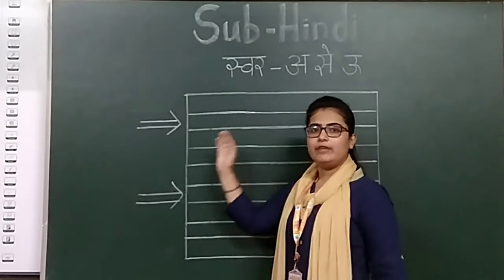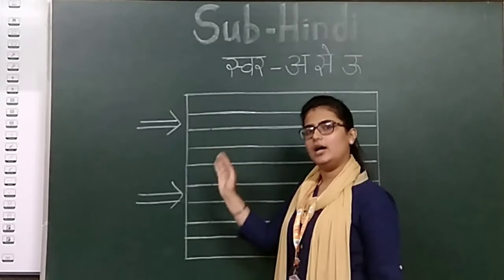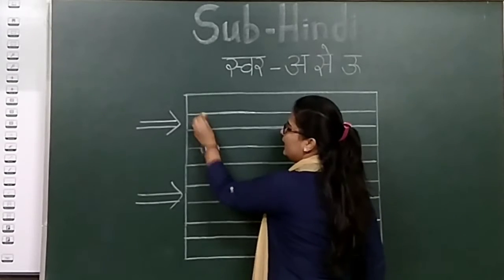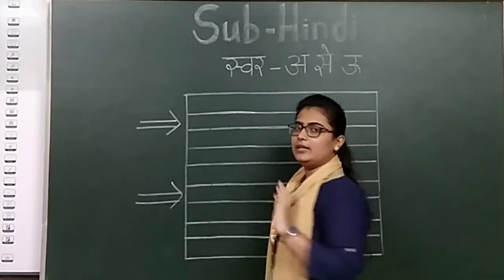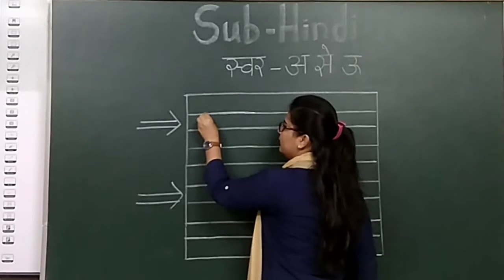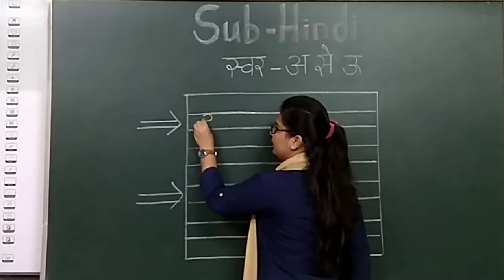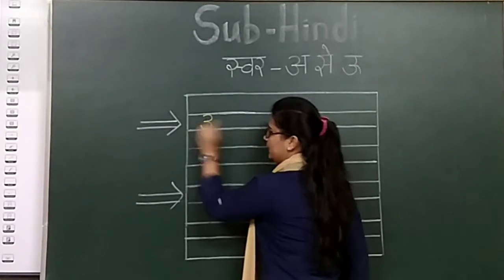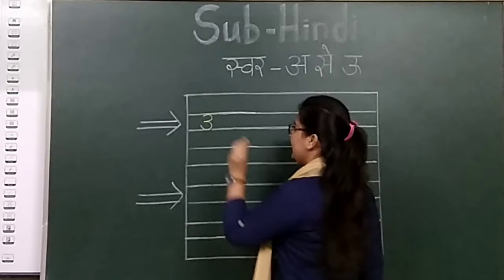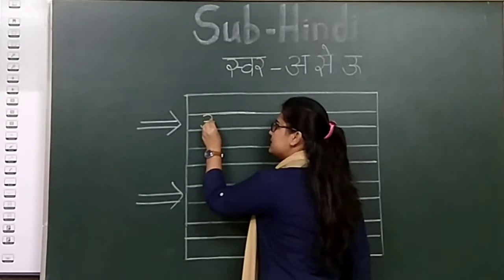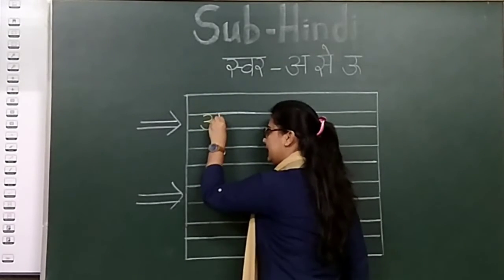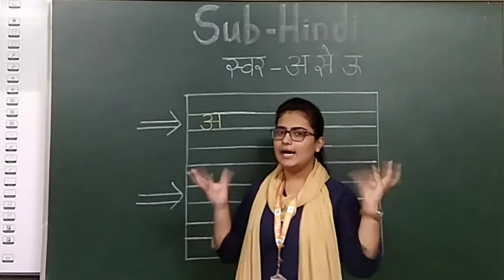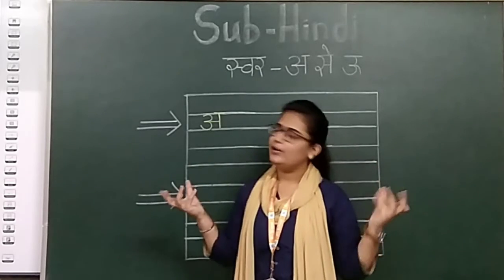First, which word will become A? Swar A — 'Aase Anand.' So here we write Aase Anand. How do we write Aase Anand? First we make a 3. Then a curve — you have to make a sleeping line, then a standing line, then a sleeping line. Aase Anand.